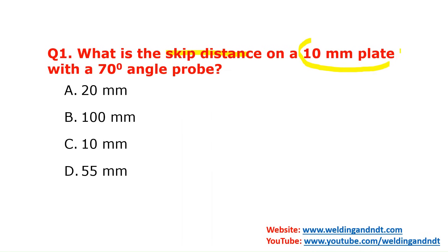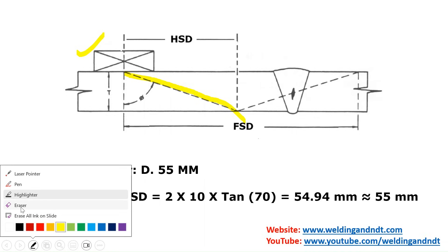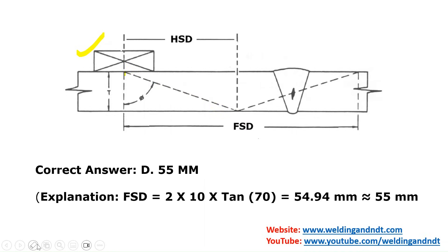This question is asking for the skip distance. Let's understand — this is your angle probe, and from the angle probe one beam will be emitted, that is an ultrasonic wave. It will strike at the bottom of the test piece and then it will be reflected. If there is no defect, it will pass through and go to the surface of the test piece.